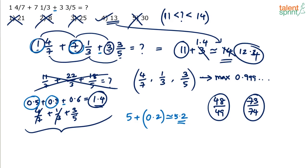Whenever you have to deal with fraction-based sums involving additions and subtractions, the best approach is to take the integer sum separately and the fraction sum separately — for example, integers 1, 7, 3 and fractions 4/7, 1/3, and 3/5.